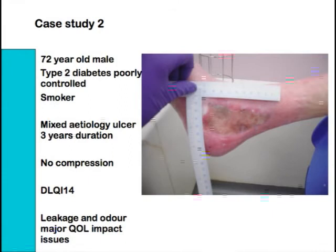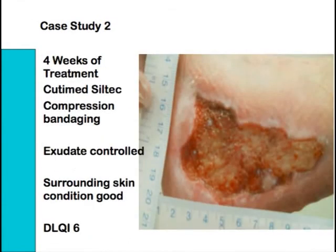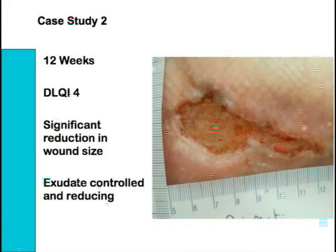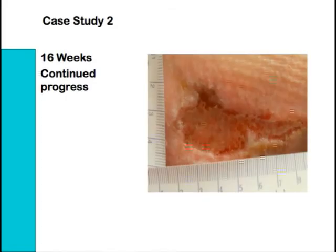Case study two: a 72-year-old man with well-controlled type 2 diabetes, a smoker, mixed etiology ulcer of three years duration with no compression for a long time. DLQI of 14 — leakage and odour cited as the major quality of life issues. After four weeks of treatment with QtMed Siltech under compression bandaging, exudate was controlled, surrounding skin significantly improved, and DLQI moved down to 6. At twelve weeks, DLQI was 4, significant reduction in wound size, exudate remains controlled and reducing. A reducing level of exudate is a clear clinical indicator that healing is going well. At 16 weeks, the patient was seen in clinic and is now very nearly healed.